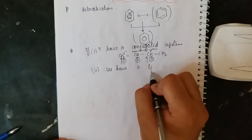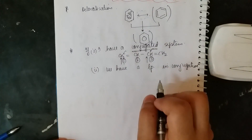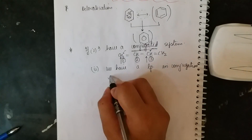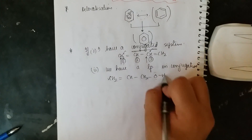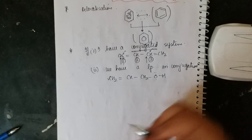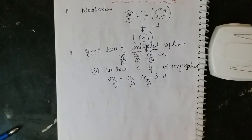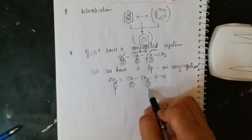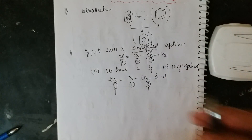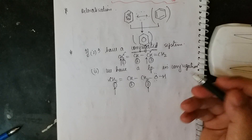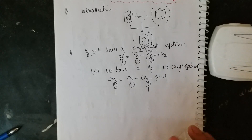The second point is a lone pair in conjugation. Let us draw the structure CH₂=CH–CH₂–OH. We decide whether this structure is in resonance or not. Naming carbons one, two, three — on the third carbon we don't have a double bond, triple bond, or any lone pair. But if I draw OH or NH₂, tautomerization is possible in OH; however if I have a lone pair that is in conjugation, resonance is possible.